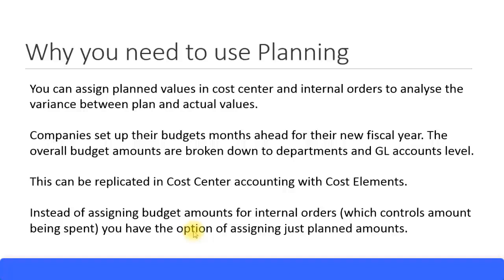We usually do planning for expense accounts — that is, your cost element accounts with cost element category number one, which are all your primary cost element accounts. You put plan values against them for cost centers. If you want to do revenue planning, it's usually done at the profit center level or at the profitability segment level for different products. In this presentation, we'll only look at doing planning for expenses specifically for cost centers.